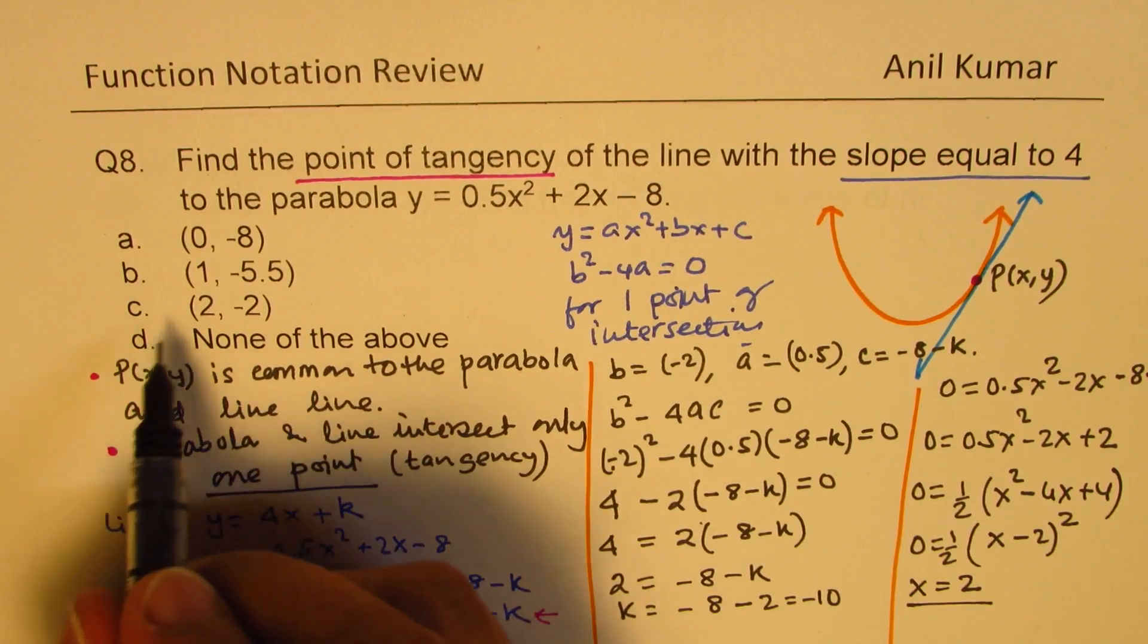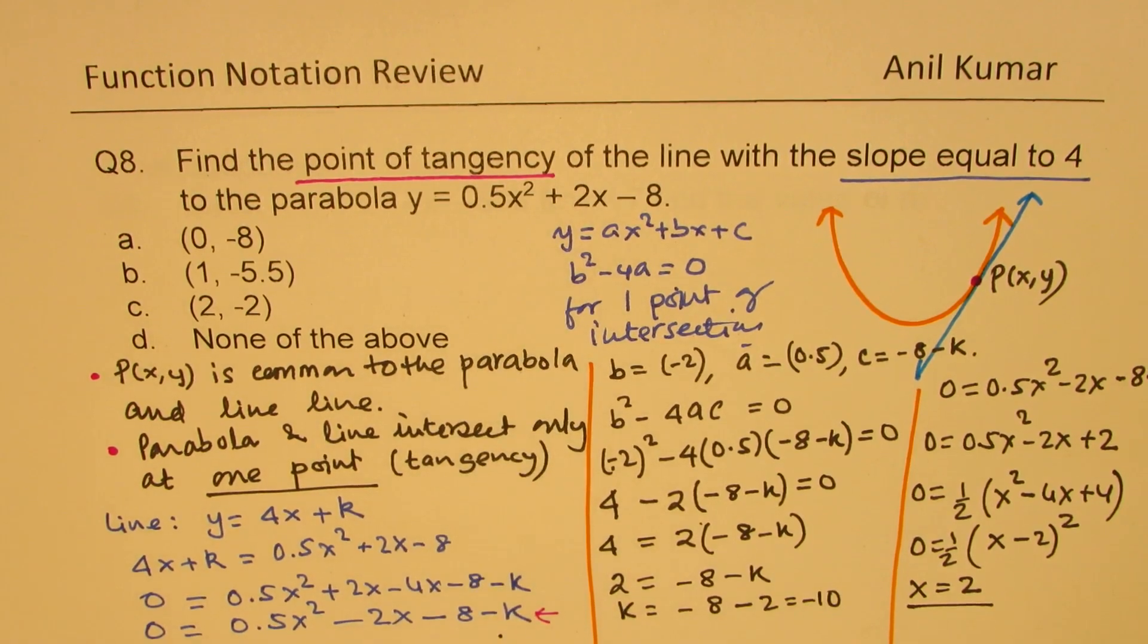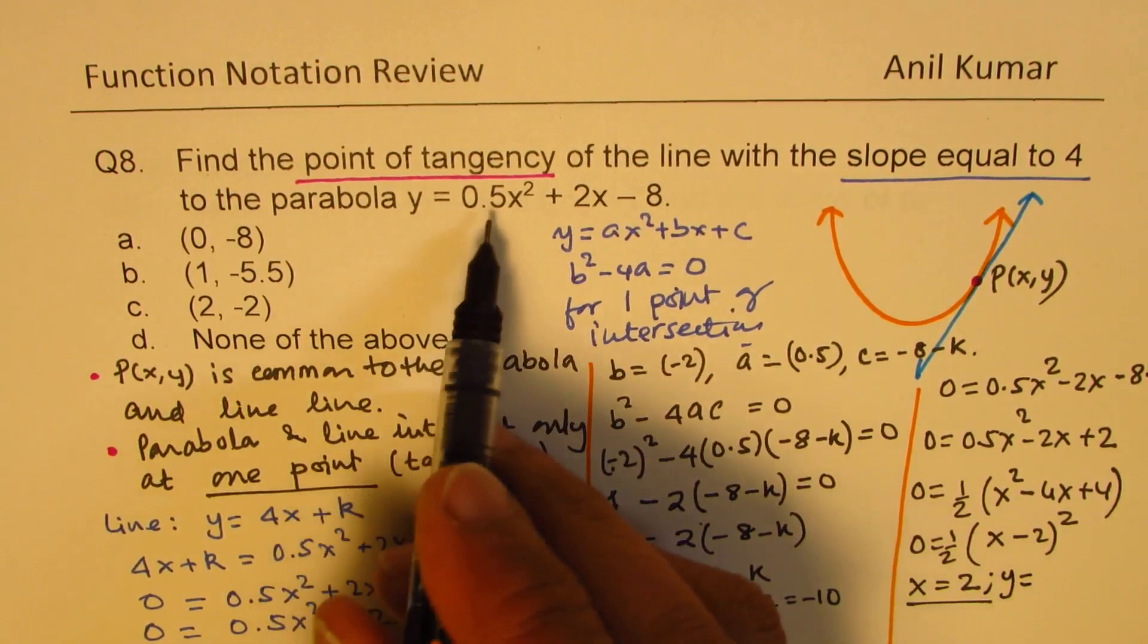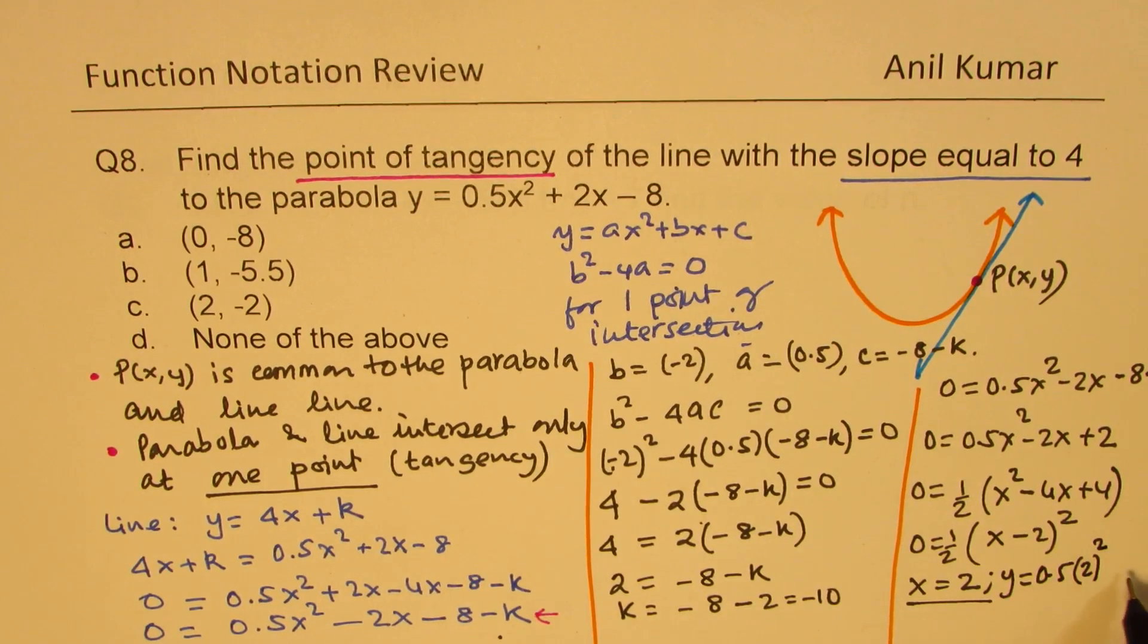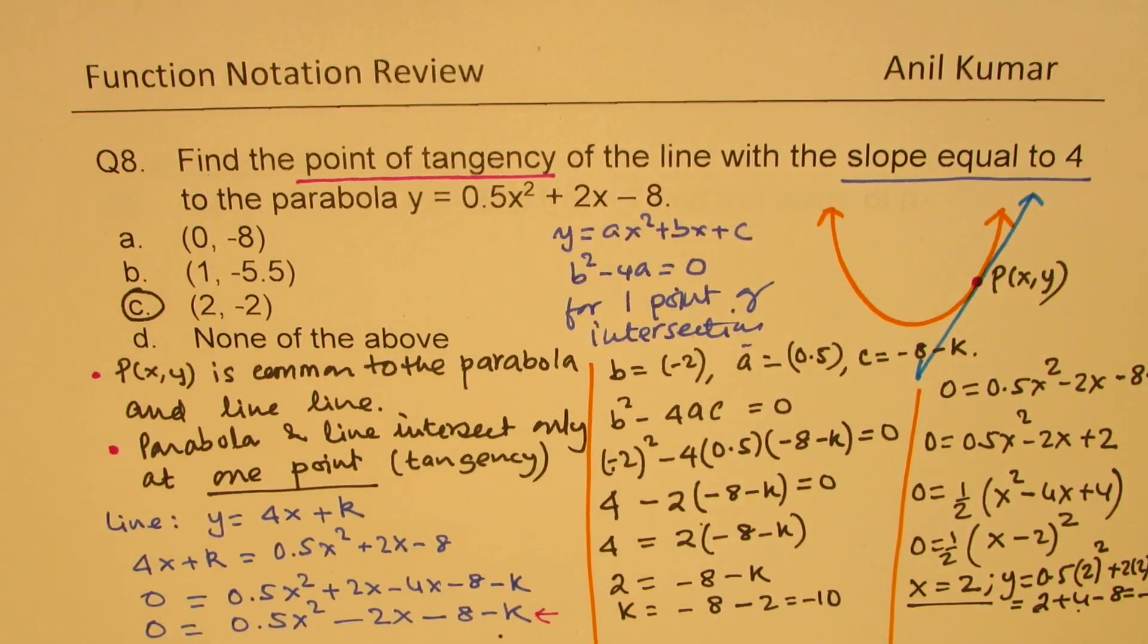We have x = 2. The only thing is, we need to figure out what y is. So let's find the value of y when x is 2. We can substitute 2 here and calculate. So we get y = 0.5(2)² + 2(2) - 8. That is 0.5(4) + 4 - 8, which is 2 + 4 - 8, so y = -2.